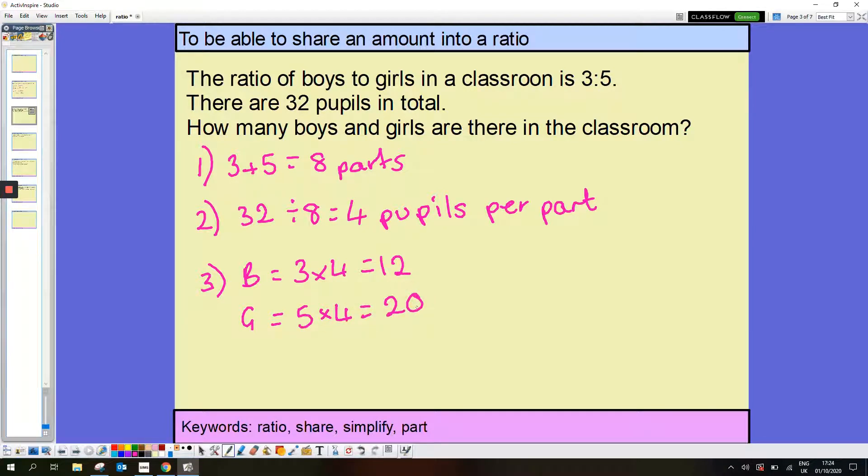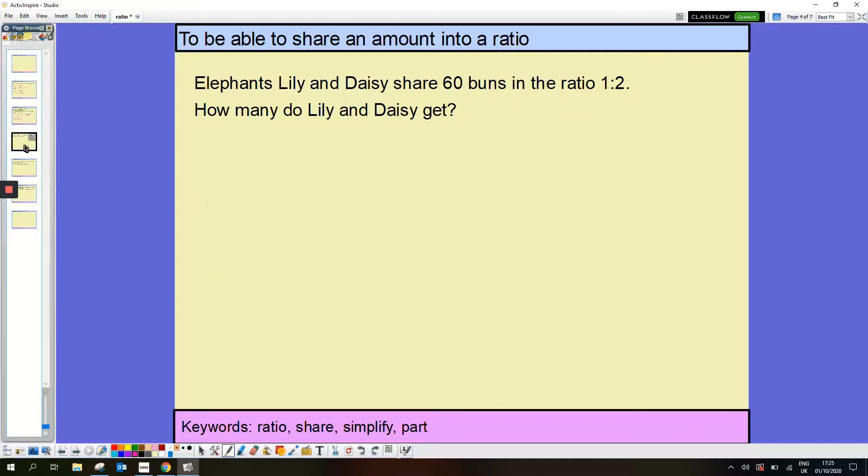Lily and Daisy share 60 buns in a ratio of 1 to 2. How many do Lily and Daisy each get? So first job, add the ratio, that's 3 parts. My second job is 60 divided by 3, which is 20. So I've got 20 buns per part.